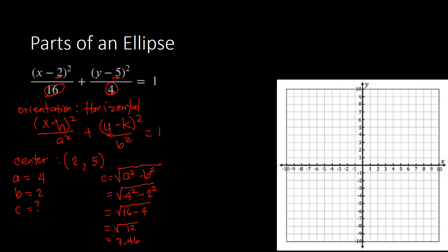So our c is equal to approximately 3.46. Now that we have a, b, and c, we can identify the different parts of our ellipse. Let's plot our center first: center is at (2, 5) — 2 on the x-axis and 5 on the y-axis.